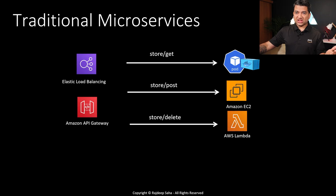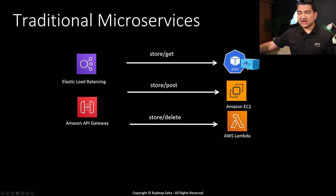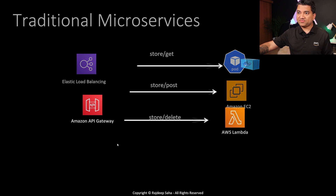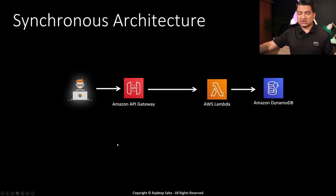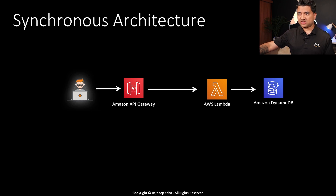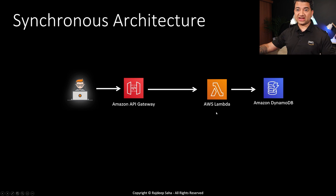Your traditional microservice kind of looks like this. You're using Kubernetes pods, an application running on EC2, or Lambda, and you expose those using either an Application Load Balancer or Amazon API Gateway. A sample design will look like: user coming to API Gateway, API Gateway going to Lambda, containers, or EC2, and that application going to the database.